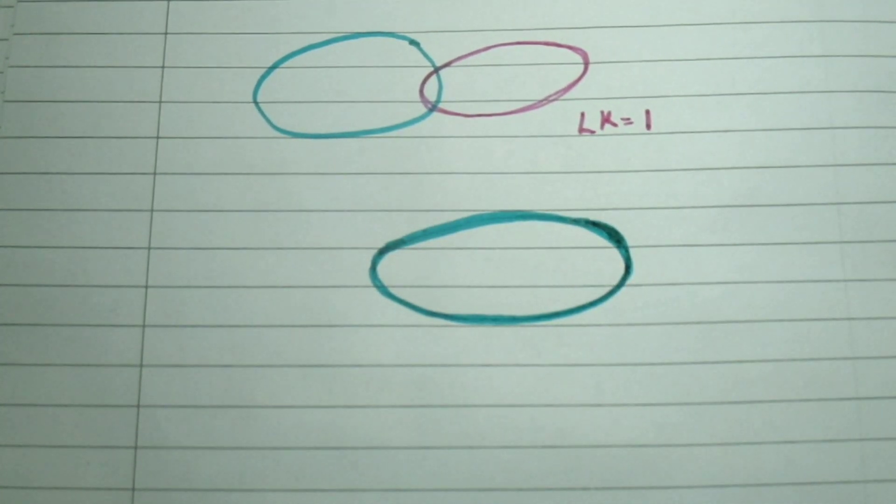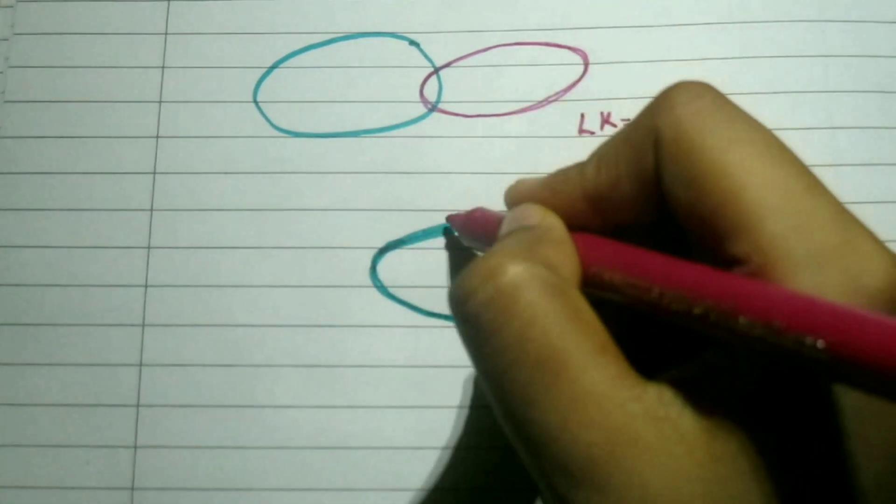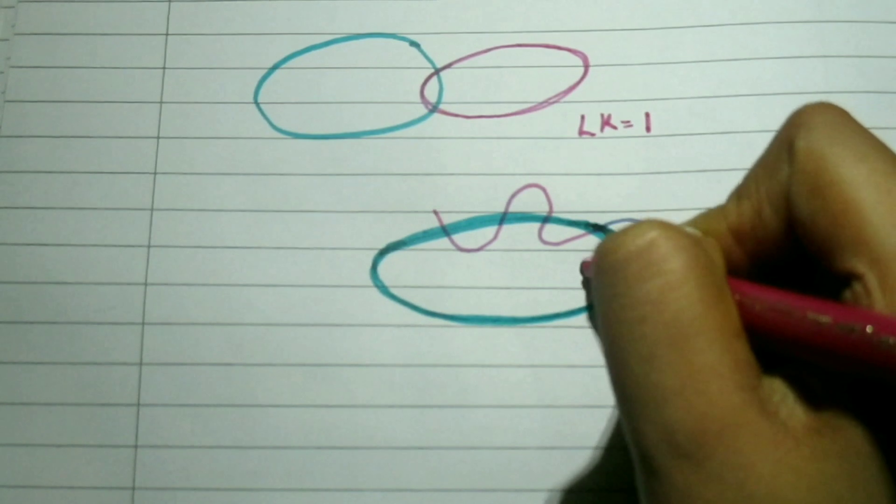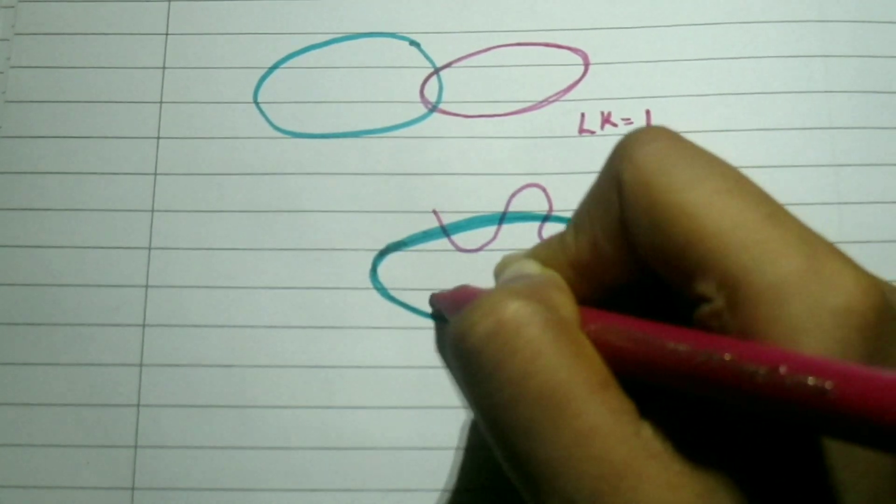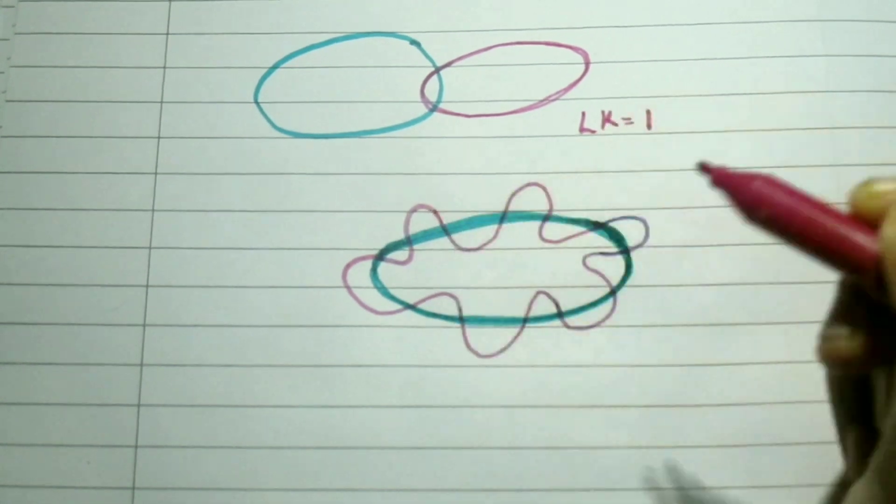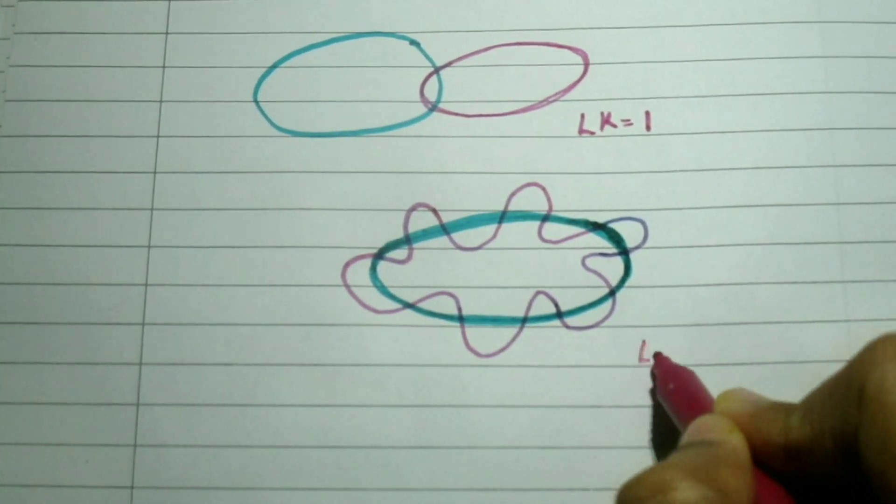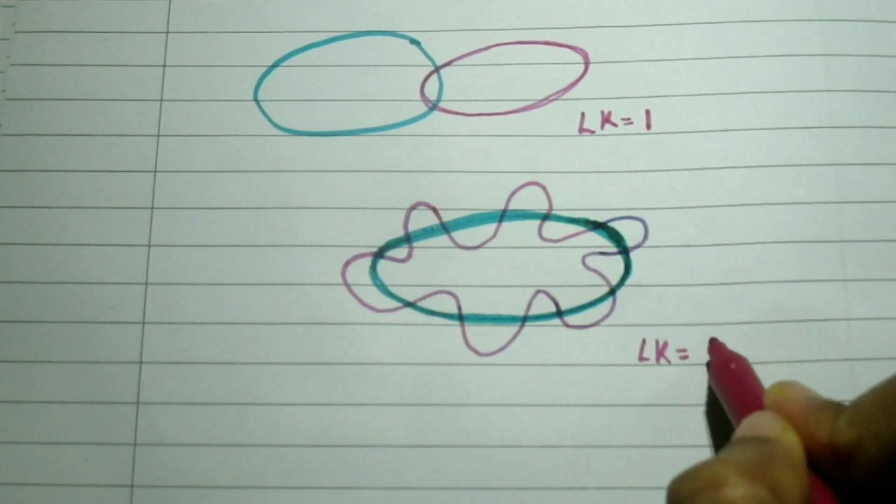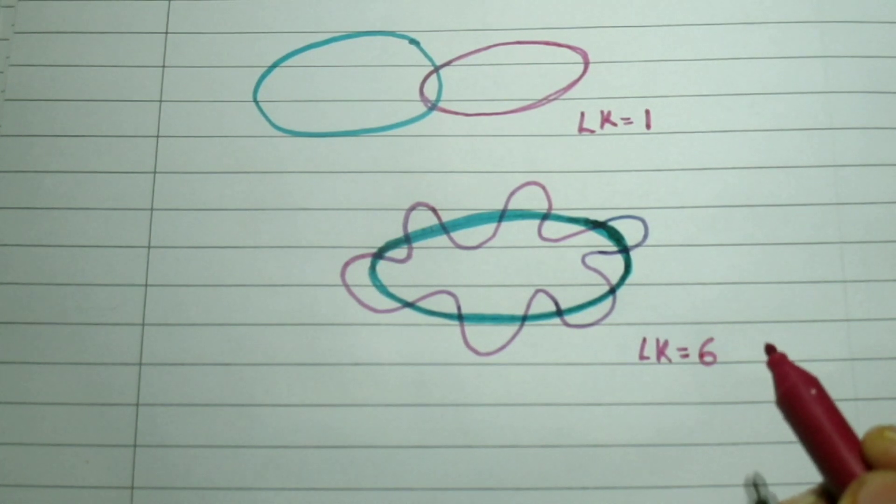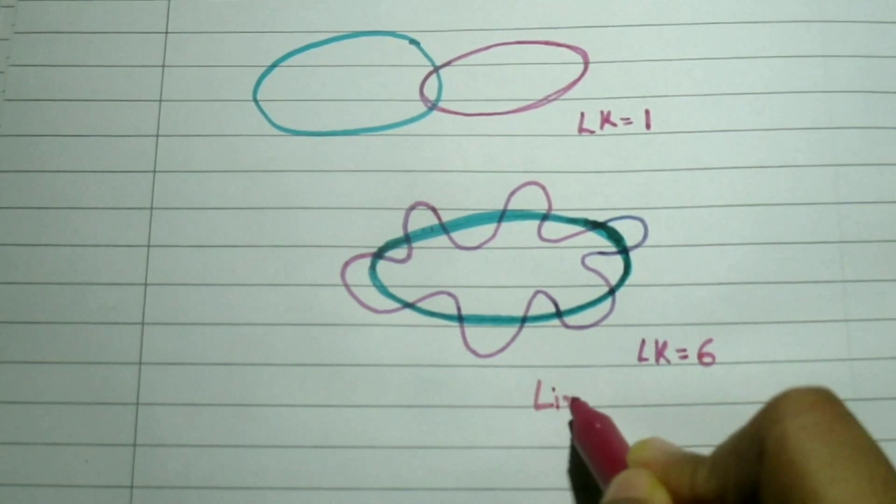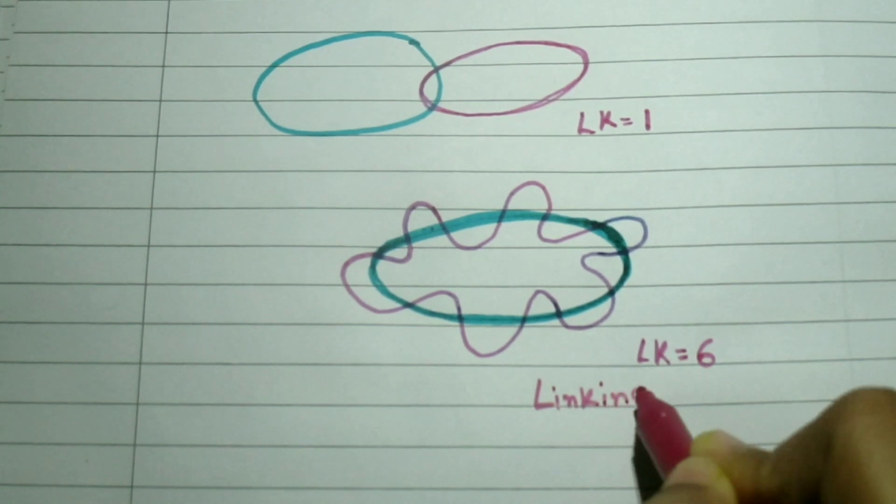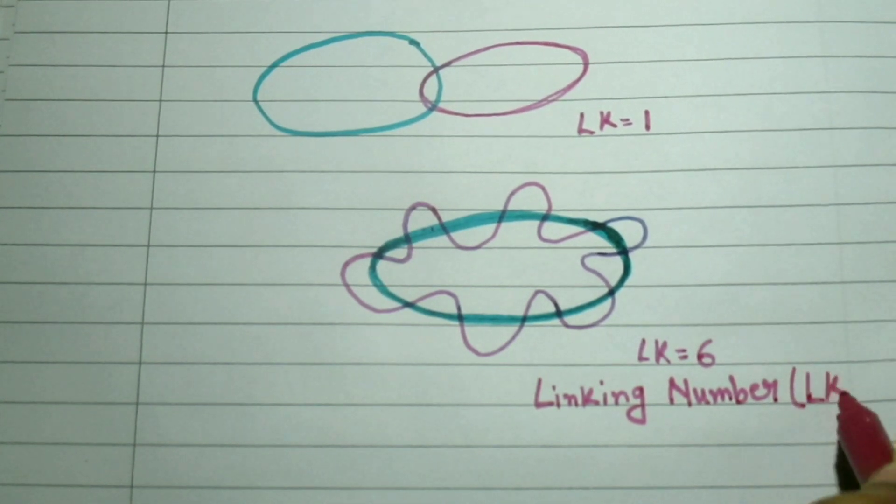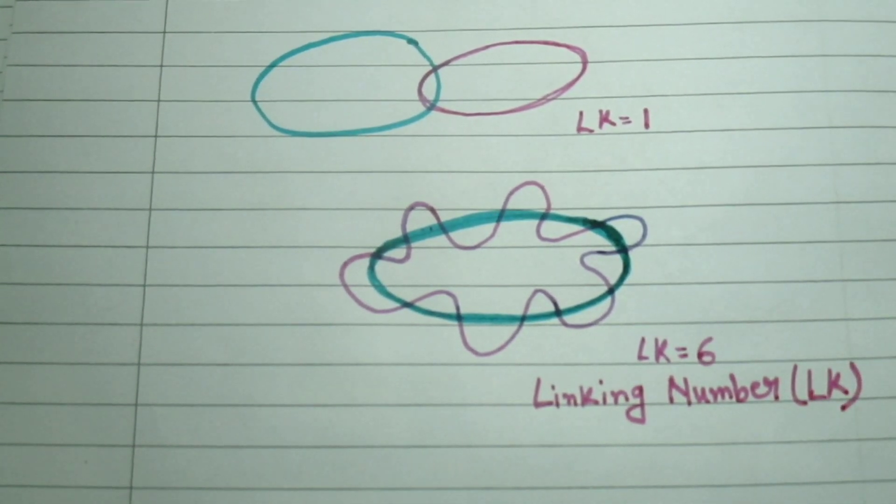If we wished to separate the two circular strands without permanently breaking any bonds in the sugar phosphate backbones, we would have to pass one strand through the other strand repeatedly. The number of times one strand would have to be passed through the other strand in order for the two strands to be entirely separated from each other is called the linking number. The linking number, which is always an integer, is an invariant topological property of CCC DNA.